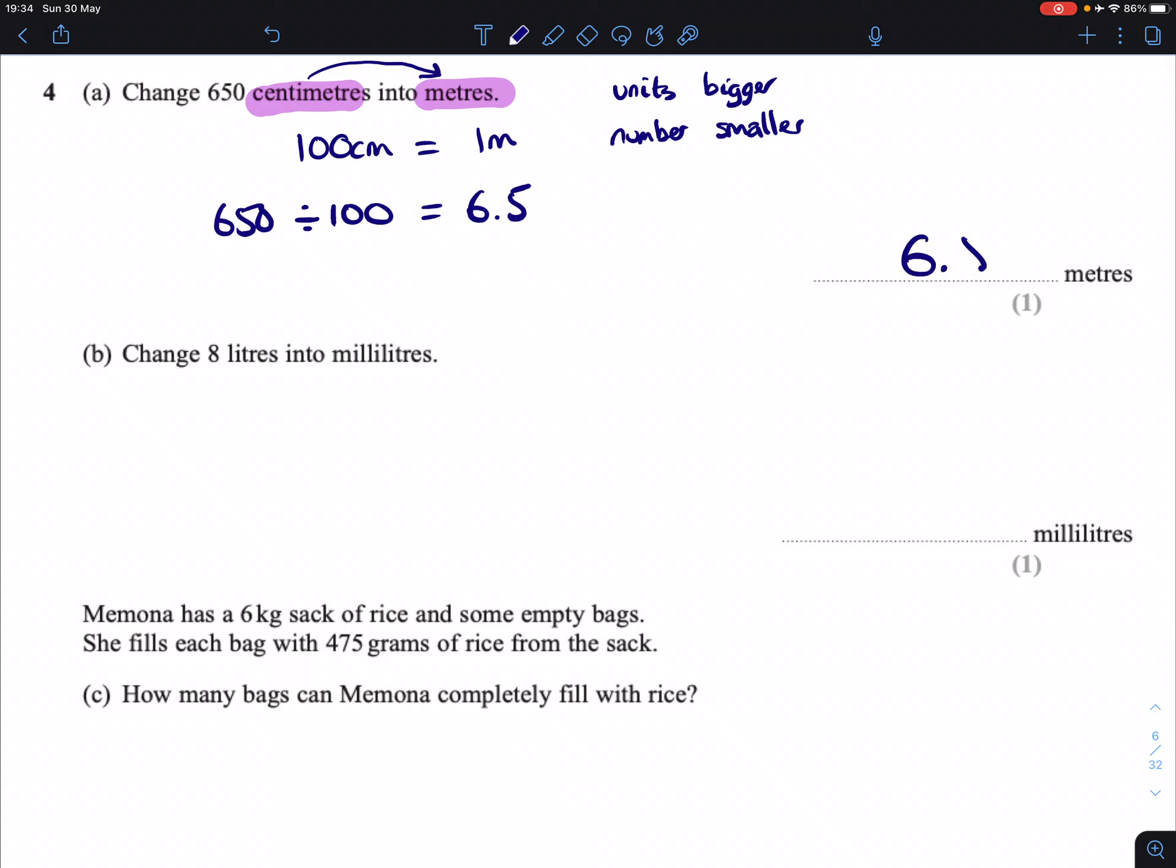So 6.5 is a smaller number than 650, but meters is a bigger thing than centimeters. They're equal. Part B, change 8 liters into milliliters.